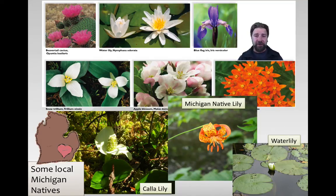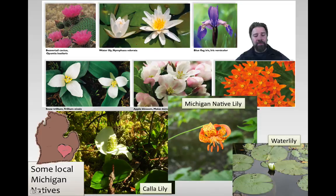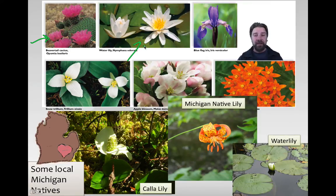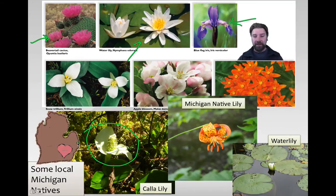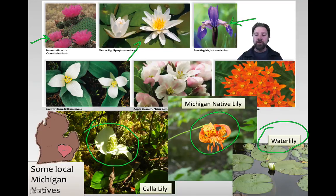This is just a subset of the group angiosperms, and it shows all of the unique and beautiful diversity of flowers - each one evolving to do its own specific thing and survive in its environment. For example, here we have a beaver tail cactus that must survive very harsh arid conditions. Here's a water lily living in an aquatic environment. This one lives in a swamp-like environment - a blue flag iris. From Michigan, we have some very unique species such as a calla lily that lives in bog-like conditions, a Michigan native lily, and of course many water lilies given our state's abundant fresh water.